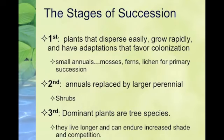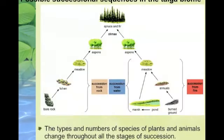Throughout this whole process, the types and specific species of plants and animals depends on which biome you are in. This picture depicts a succession of a taiga biome across all different types — succession from rock, from water, and from fire. You can see the main difference is lichen versus annuals in the first stage.